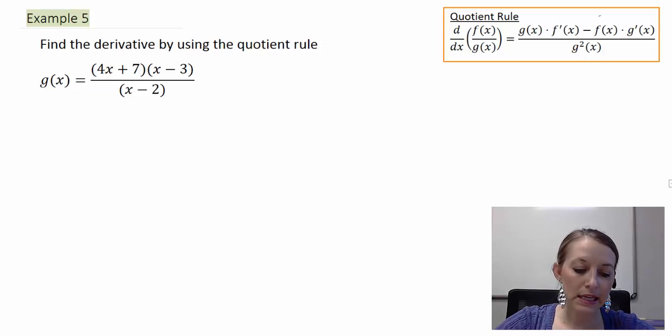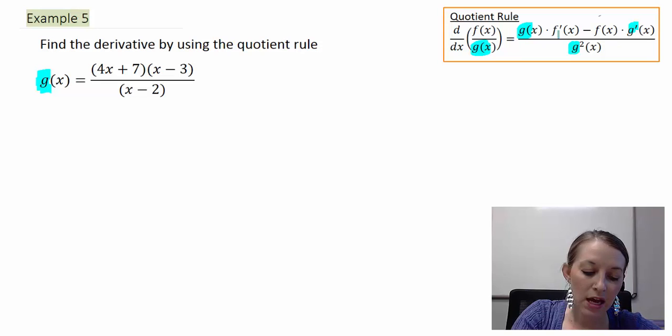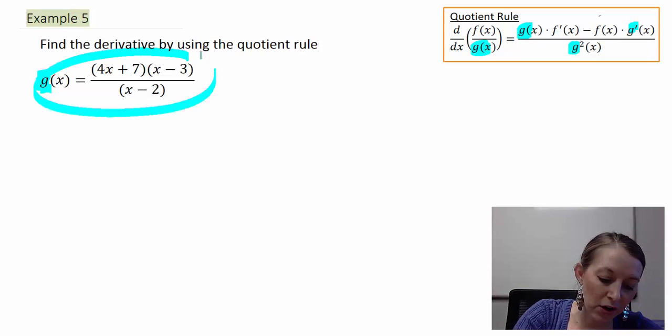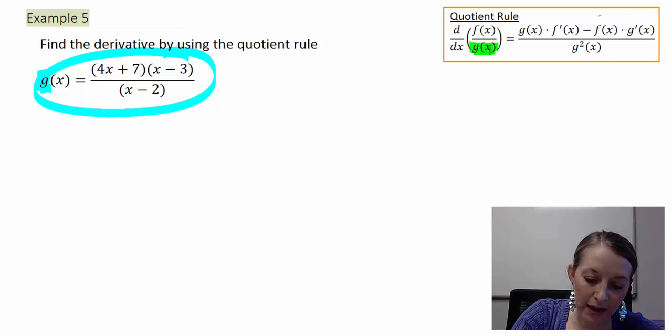When we see this g of x here, don't get confused if that's the same as this g of x over there. These mean two different things. This is the name of this function, and this g of x represents anything in the denominator. So if I were to color code these, this g of x just represents whatever I have in the denominator. So don't get the duplicate g's mixed up.